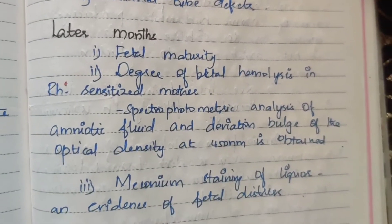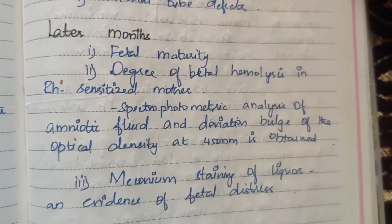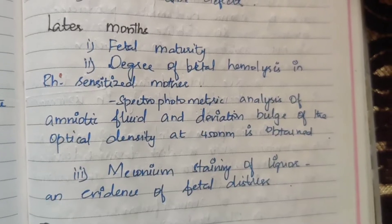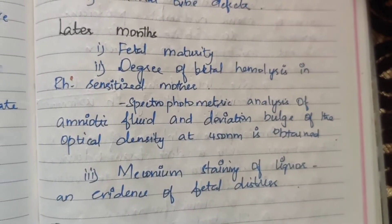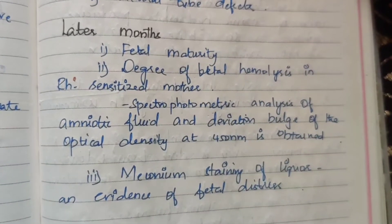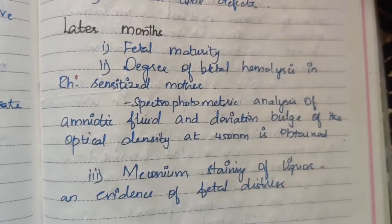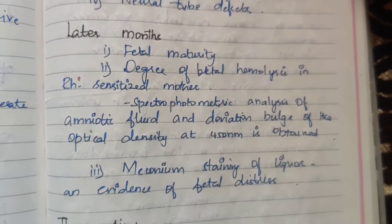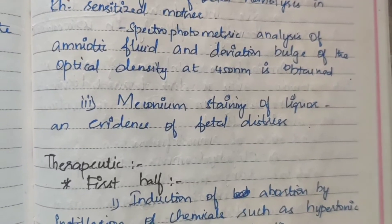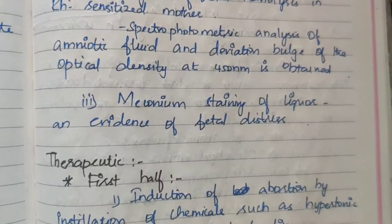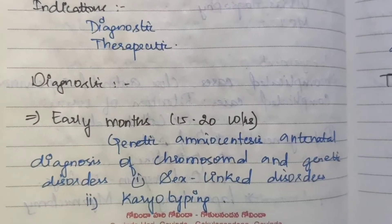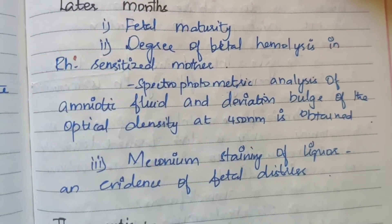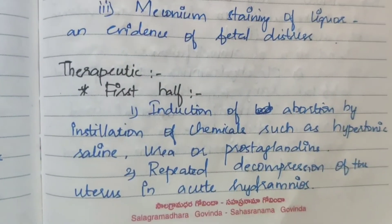In later months, after 20 weeks, the diagnostic purpose includes assessment of fetal maturity and degree of fetal hemolysis, and meconium staining of liquor — to find out what to do next.